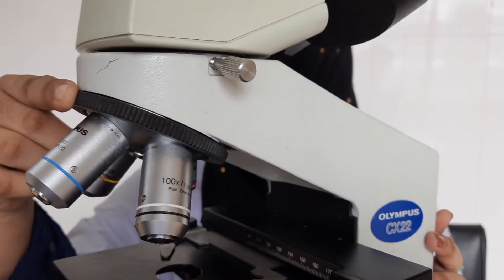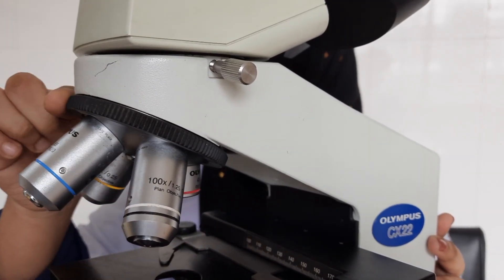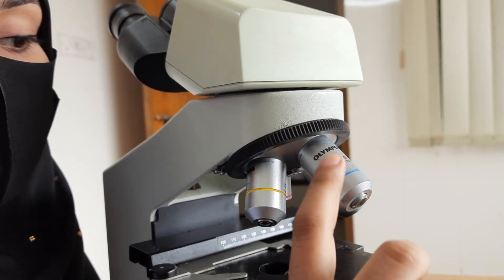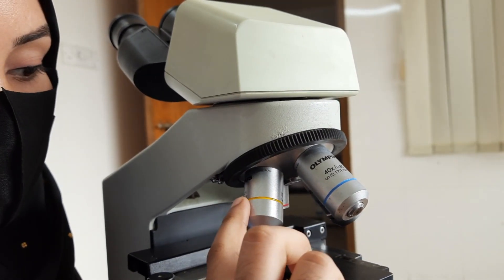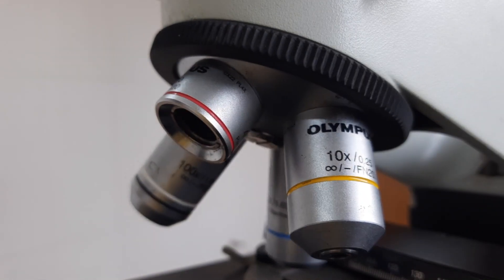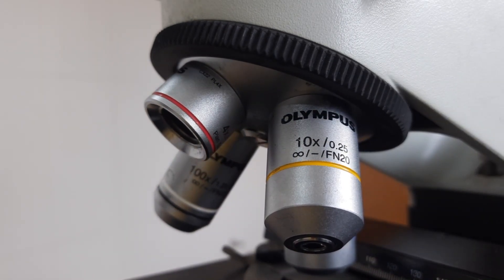You can easily switch between different objectives by turning the nose piece. The objectives are a set of lenses positioned below the head in the nose piece. Each objective lens offers different levels of magnification, typically ranging from 4x to 100x.